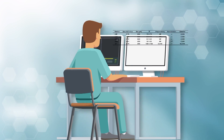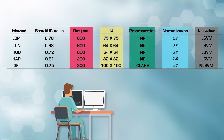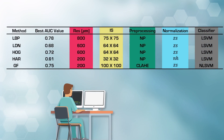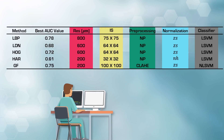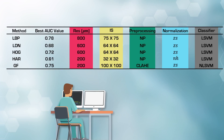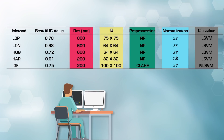The performance of each texture analysis method was indicated by the area under the receiver operating characteristics curve. LBP produced the best AUC value of 0.78, at pixel resolution 800 microns, integration scale 75 by 75, no pre-processing, Z-score normalization method, and linear SVM, whereas HAR produced the lowest AUC value of 0.61.